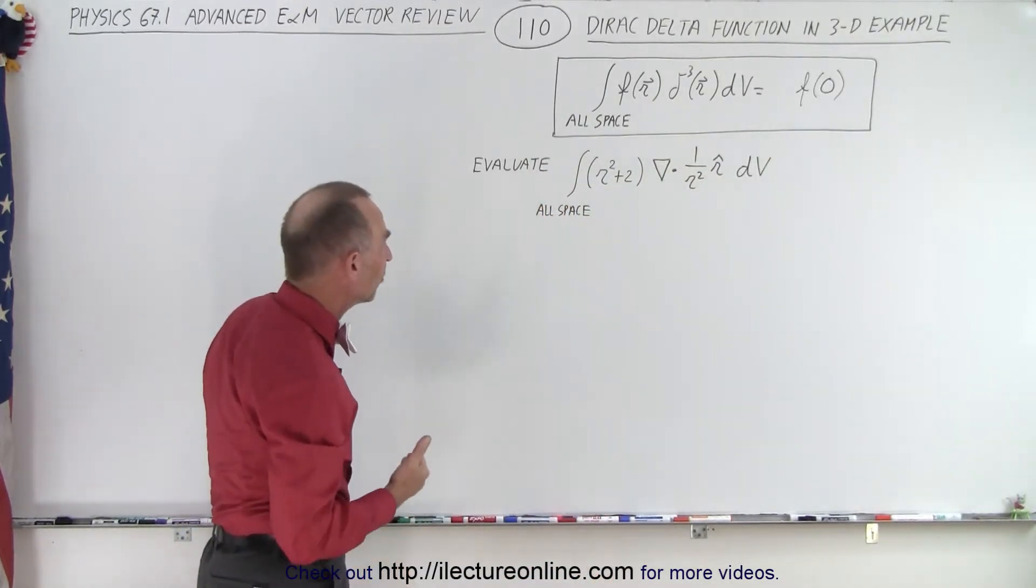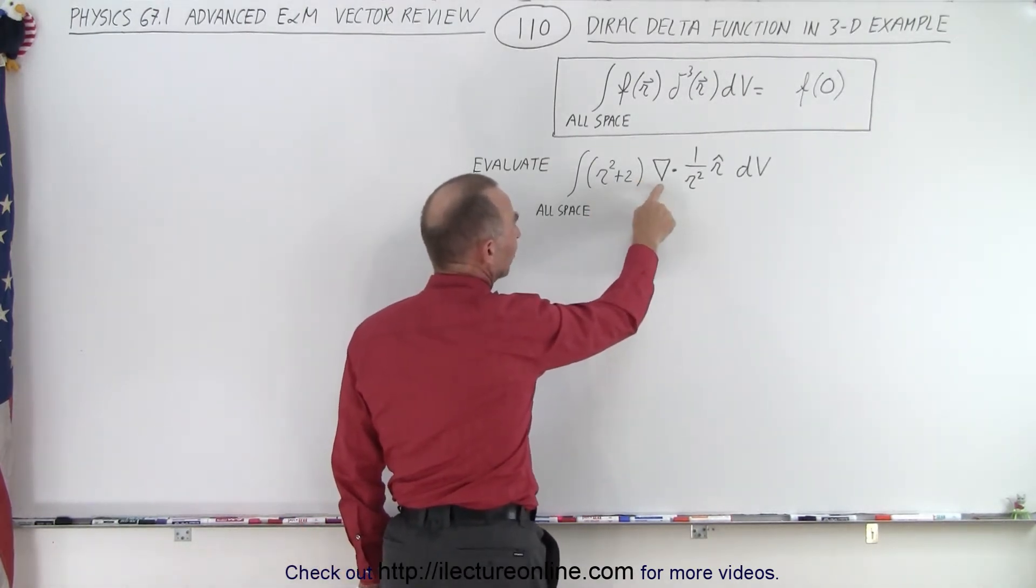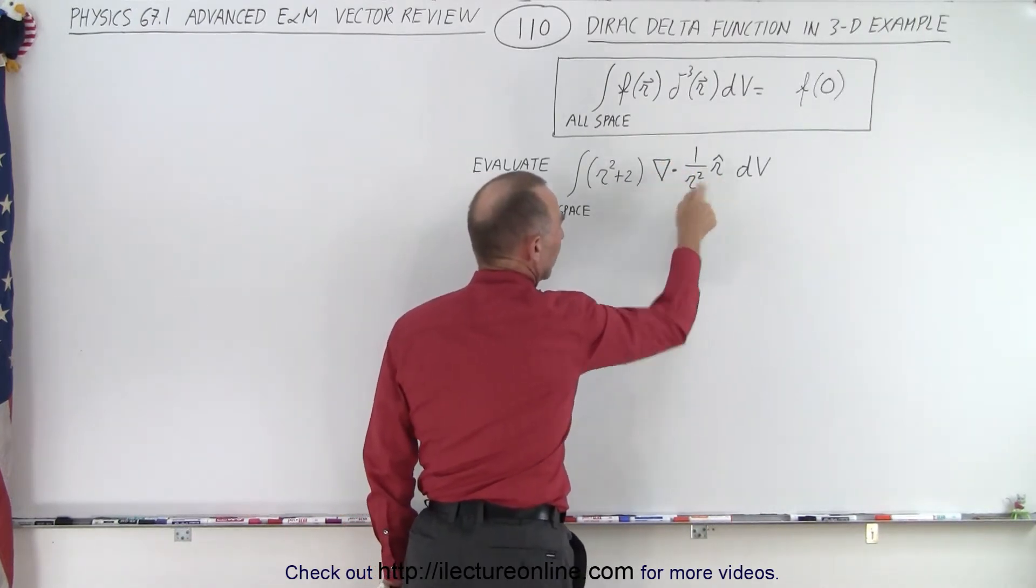So here we've given this integral: we have a function of r square plus 2 and that's multiplied times the divergence of 1 over r square in the r direction dv.